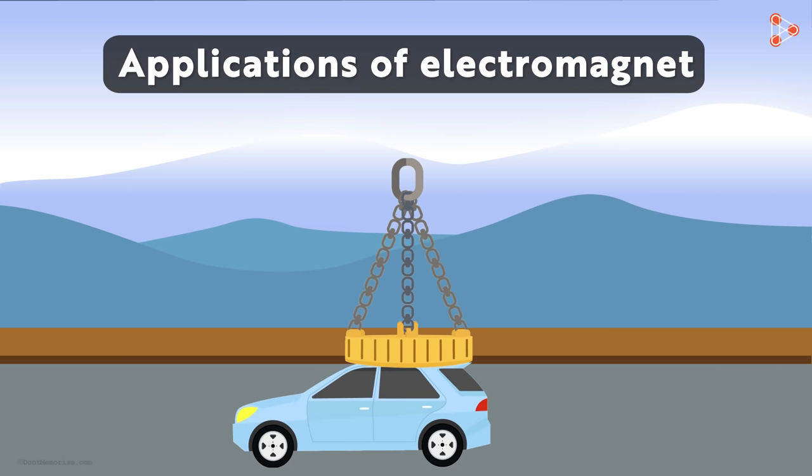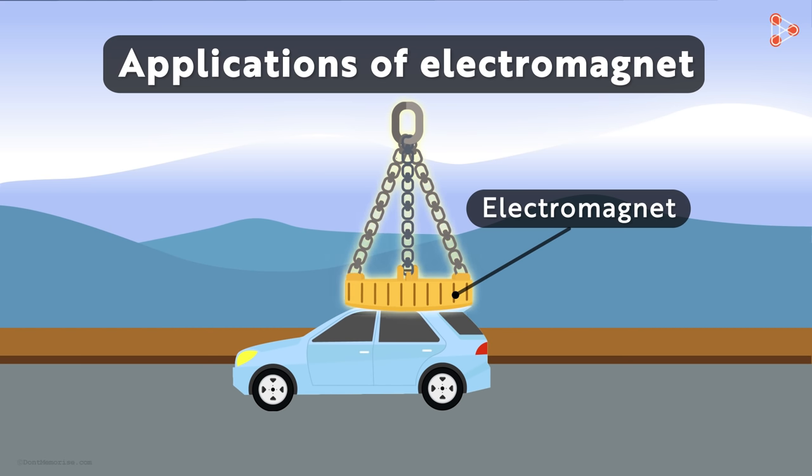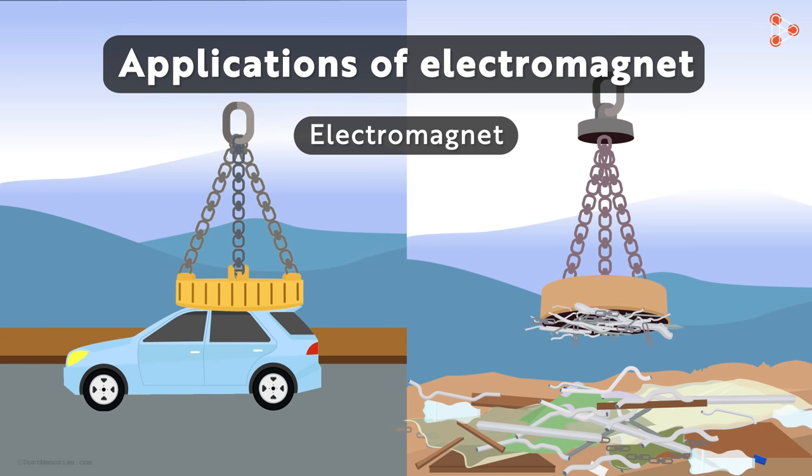You must have seen large machines used to lift up cars. They have an electromagnet in them. This electromagnet is so strong that it can lift the whole weight of the car. Electromagnets are also used to separate metal objects from a pile of junk.